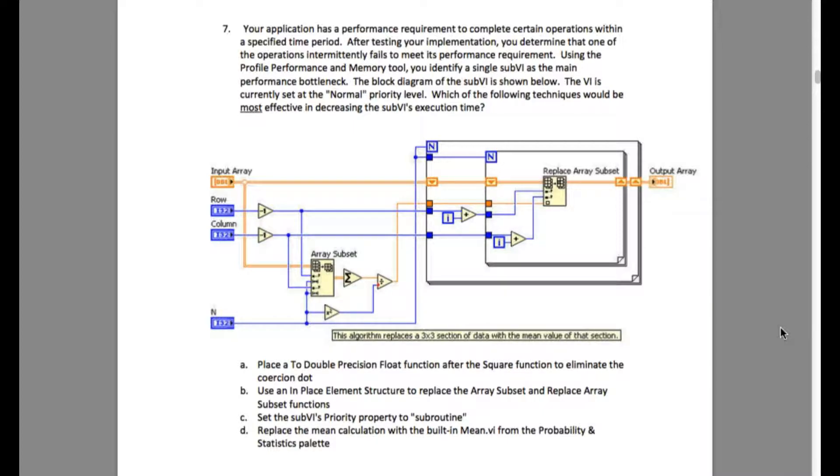Which of the following techniques would be most effective in decreasing the sub-VI's execution time? If you observe the code very carefully,